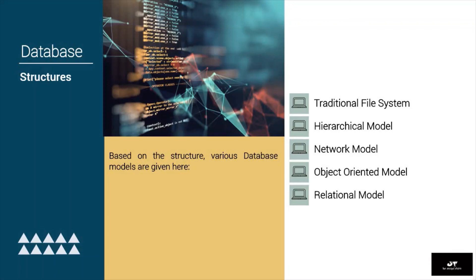Relational model: the relational data model is the primary data model used widely around the world for data storage and processing. It is simple and has all the properties and capabilities required to process data with storage efficiency. Data is stored in tables called relations, which store the relationships among entities. A table has rows and columns, where rows represent records and columns represent attributes. A single row of a table, which contains a single record for that relation, is called a tuple.